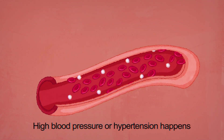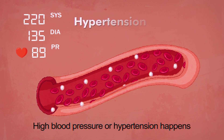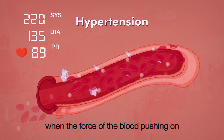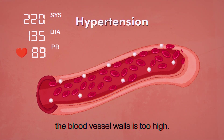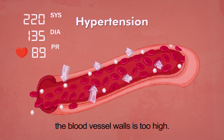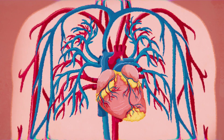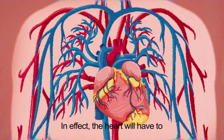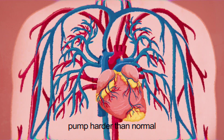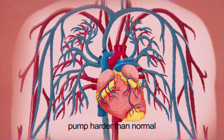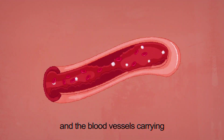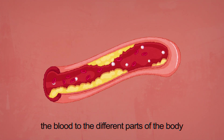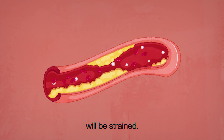High blood pressure, or hypertension, happens when the force of the blood pushing on the blood vessel walls is too high. In effect, the heart will have to pump harder than normal, and the blood vessels carrying the blood to different parts of the body will be strained.